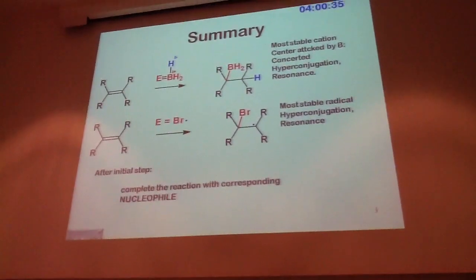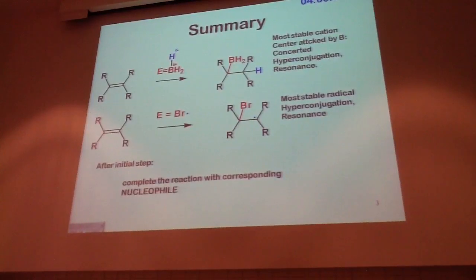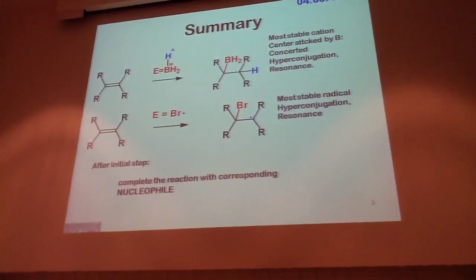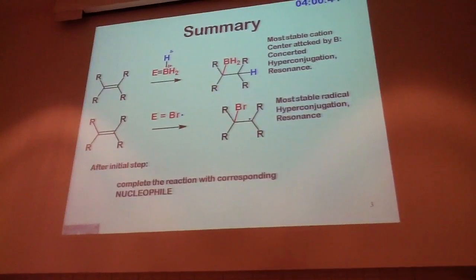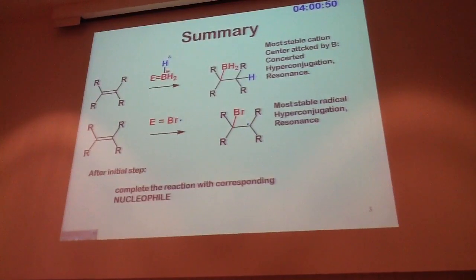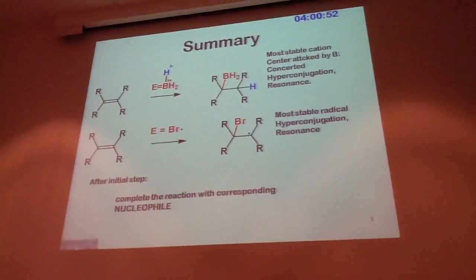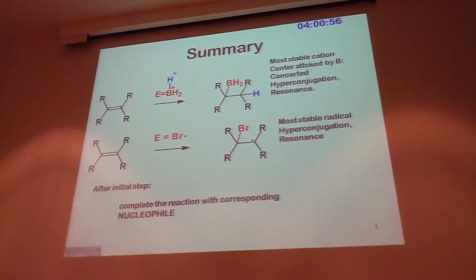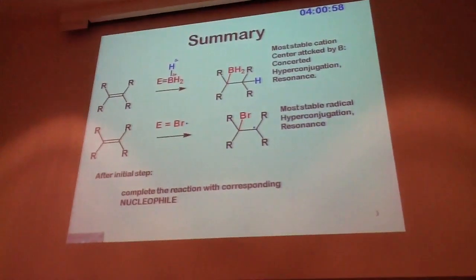Notice also that sometimes we cannot look at the reactions as simply as Markovnikov did, which the only thing he did was counting hydrogens. We know more than he does, because we know that there are carbocation intermediates and ionic intermediates, so that what counts for the selectivity is the stability of the intermediate.